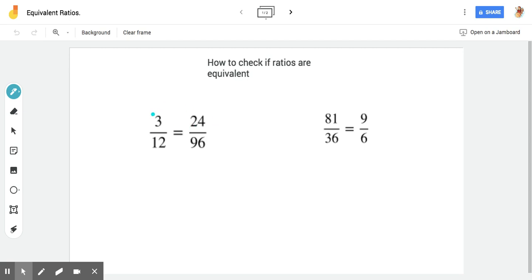So we're going to look at the top number here and ask ourselves, how could I take that three and turn it into 24? I can either multiply or divide. I know that three times eight is 24. Now, in order for this to be equivalent, that sentence has to be true on the bottom too.